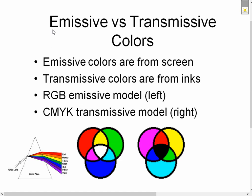I want to talk about the difference between what we call emissive versus transmissive colors. Let's look at the two models below. The one on the left is an emissive model, meaning it's emitting color, and the other one is a transmissive model, which is the one on the right.